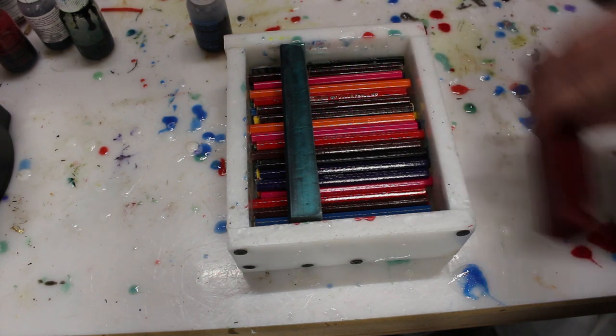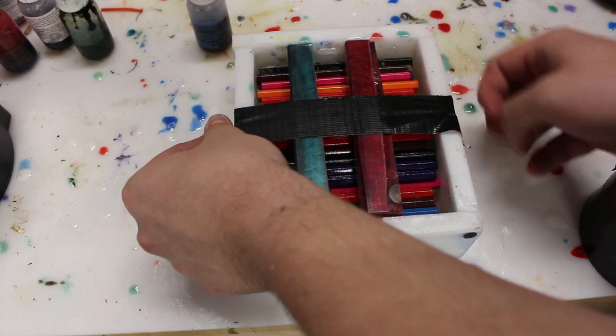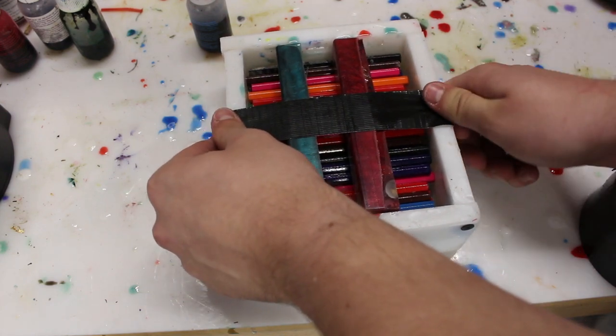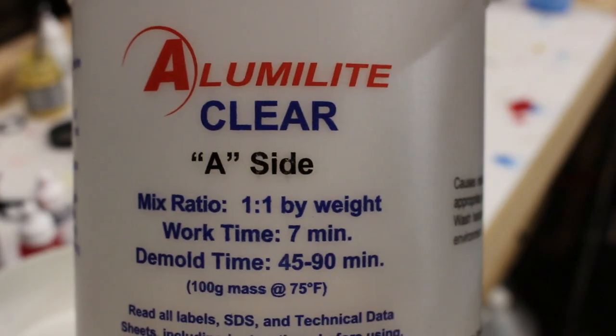Then I use a little duct tape to tape them down just so I kept the exact orientation of the pencils that I wanted and to make sure that there wasn't going to be any floating or moving around.